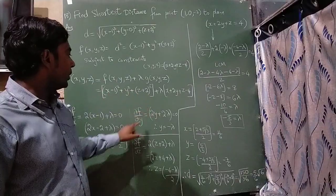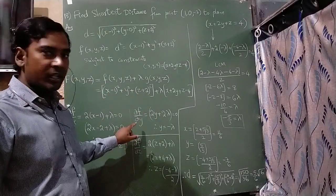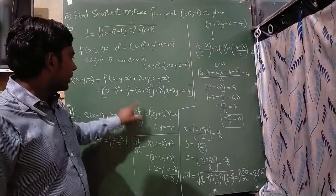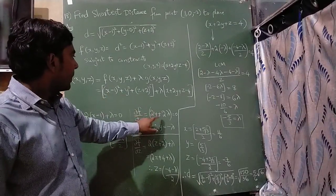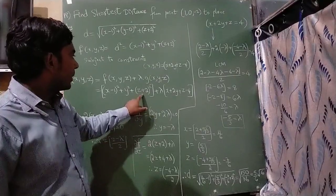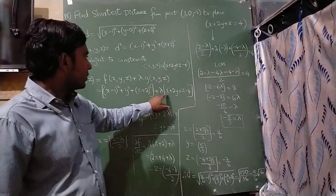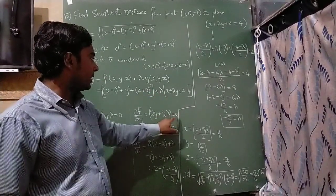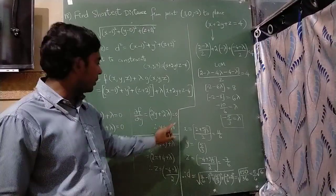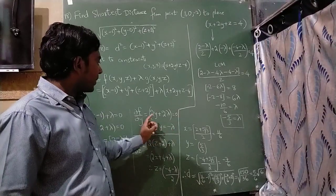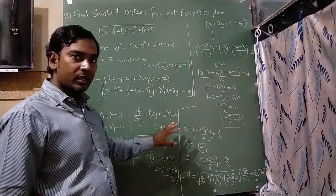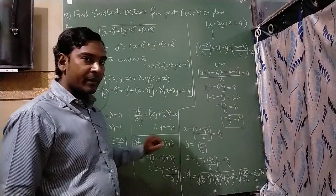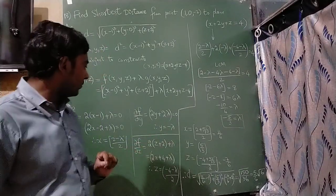Differentiating with respect to y: the x and z terms become 0, y² becomes 2y, and the constraint gives 2λ. Equating to 0 and shifting terms: y = -λ.